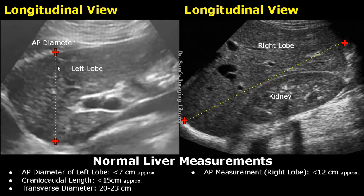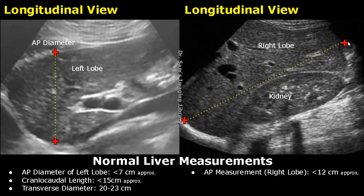For the right lobe, a craniocaudal length is taken. It is usually less than 15 cm. When the right kidney is fully visualized, we can measure the craniocaudal length. One caliper is placed just below the diaphragm and the other caliper is placed at the inferior margin of the liver.